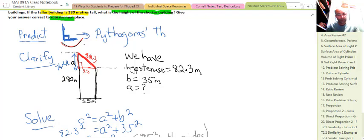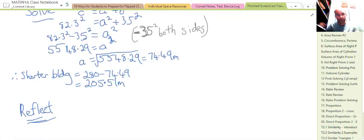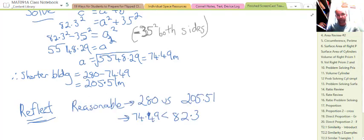Now let's reread the question: what is the height of this shorter building? The shorter building is the taller building minus - the taller building goes right up to there, minus the bit that comes down from the top which is 74.49. So it's 280 take 74.49. Doing that you get 205.51 meters.